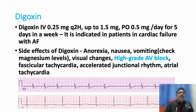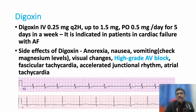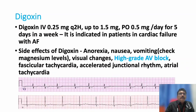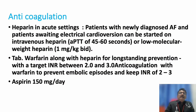Digoxin is an important drug for atrial fibrillation with cardiac failure. In patients without cardiac failure, digoxin should not be used because it has many adverse effects. However, if cardiac failure is present with atrial fibrillation, digoxin is the best choice — it improves pumping, reduces heart rate, controls the rate, and improves cardiac output.